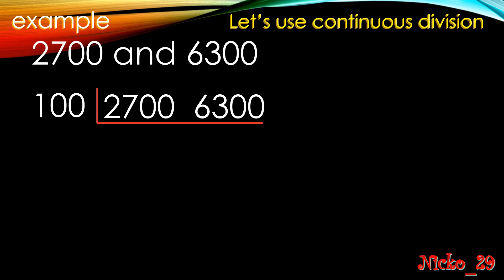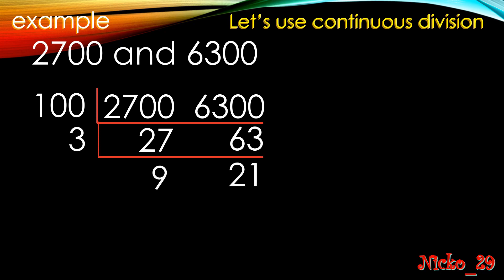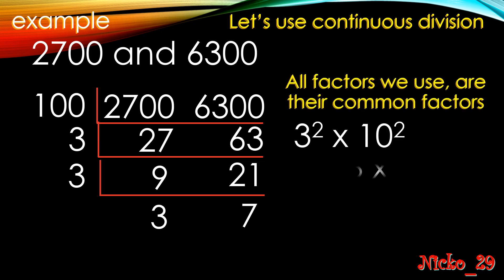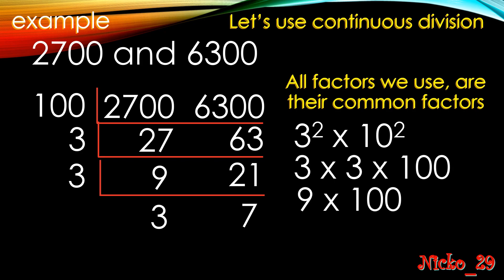Let's try 2,700 and 6,300. Using 100 (which is 10 × 10) removes two zeros, giving us 27 and 63. Both are divisible by 3, giving 9 and 21. Both divisible by 3 again, giving 3 and 7 — both prime, so we stop. The common factors used are 3 squared times 10 squared, meaning 3 × 3 × 100. So 9 × 100 = 900. The GCF is 900.